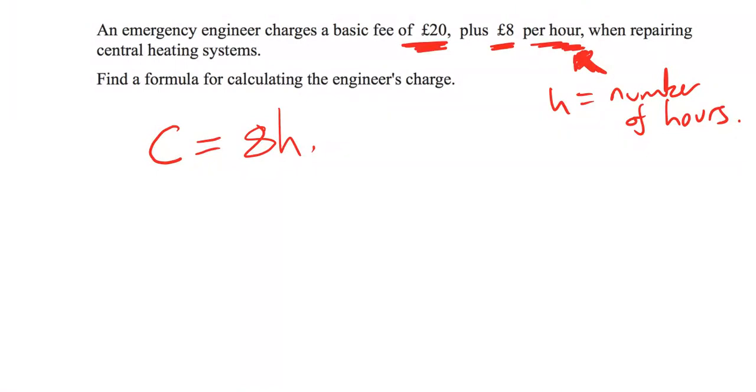So the 8H is this hourly amount. But we have to remember there's that £20 on top. So let's just add that. That's a fixed fee. That's going to stay like that. So our engineer's charge is going to be 8H plus 20, if H is the number of hours.